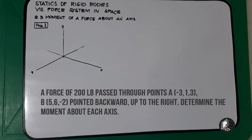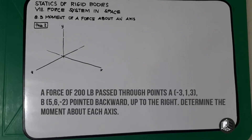This is problem number two for the moment of a force about an axis. A force of 200 pounds passes through point A located at negative three feet, positive one foot, and positive three feet, and point B at positive five feet, positive six feet, and negative two feet, pointed backward upward to the right. Determine the moment about each axis.